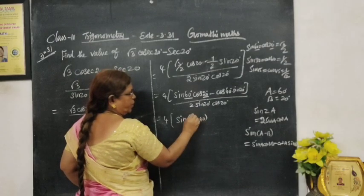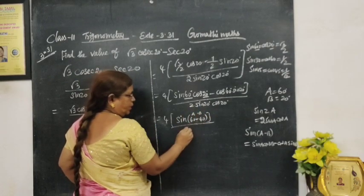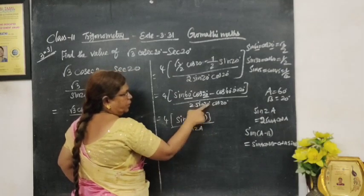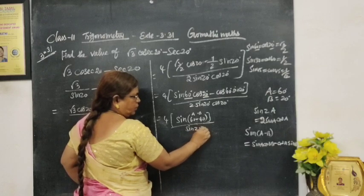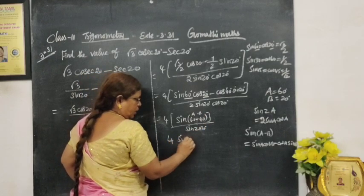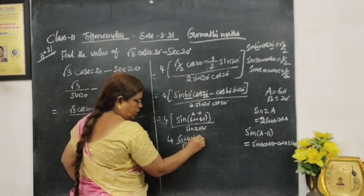Formula is sin(A - B) = sin A cos B - cos A sin B. So sin(A - B). This is sin A cos B - cos A sin B. A is 20 degree. So sin 40 degree. So that is 4 sin 40° / sin 40°. So that means this is the value.